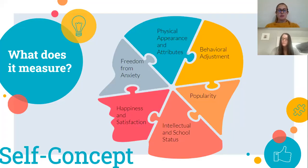This self-concept scale measures an adolescent's self-concept or perception of oneself. This includes how they view themselves, their attributes, and their behaviors. The six domains or subscales used and measured within the assessment are behavioral adjustment, intellectual and school status, physical appearance and attributes, freedom from anxiety, popularity, and happiness and satisfaction.